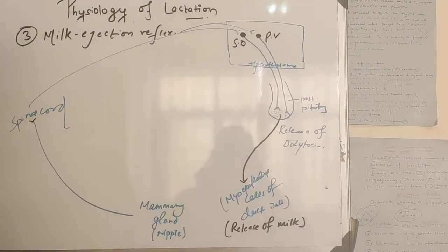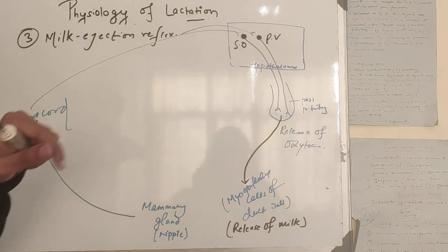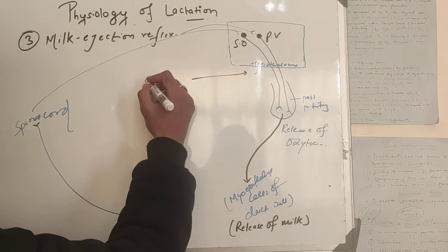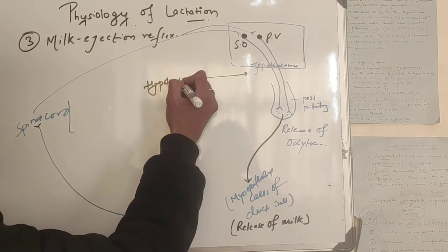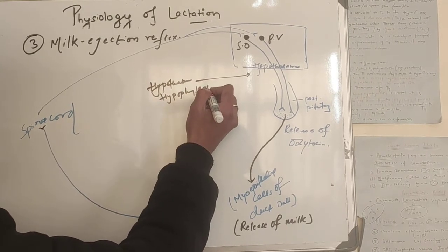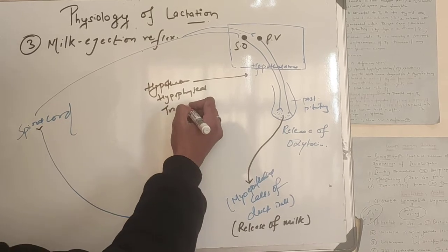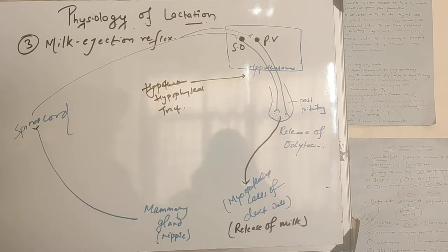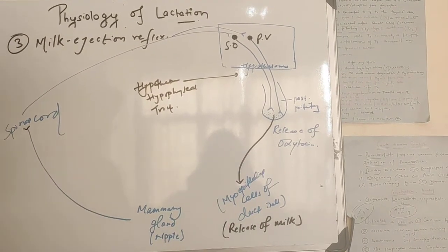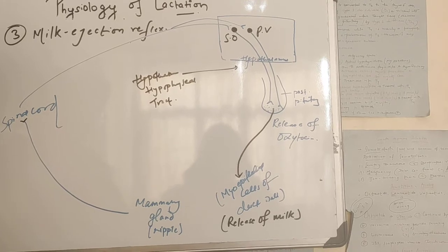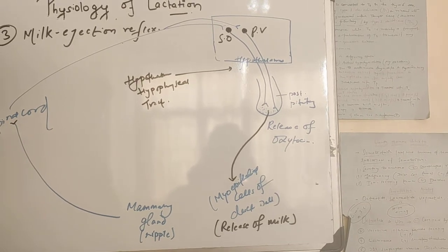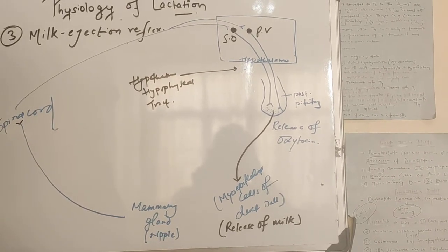From them, the impulse is sent to posterior pituitary via hypothalamus hypophysial tract. It stimulates release of oxytocin that are stored in posterior pituitary. From there, the release of oxytocin have its activity on myoepithelial cells of duct wall of mammary gland.